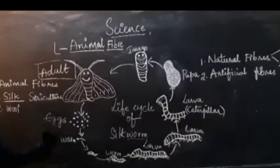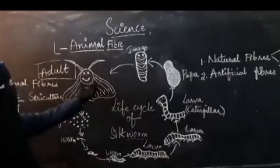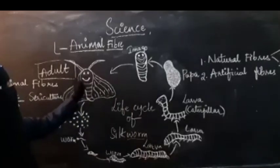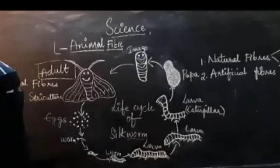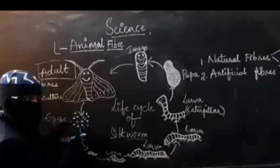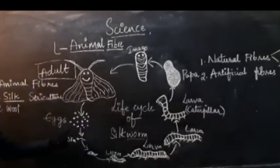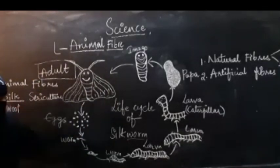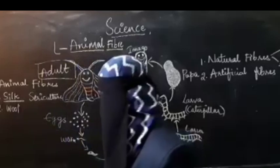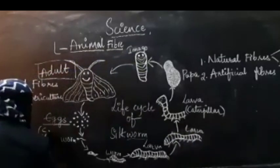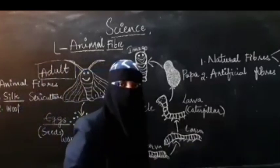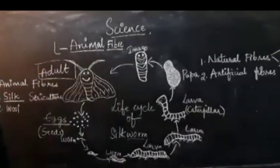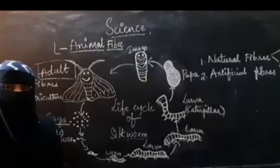So let us learn how sericulture starts. The life cycle begins with the adult silk moth, which looks like a butterfly. Near the moth you can find small dot-like structures — these are eggs. The eggs of the silk moth are also called seeds, because just as seeds are used to grow new plants, these eggs are used to grow new silkworms.